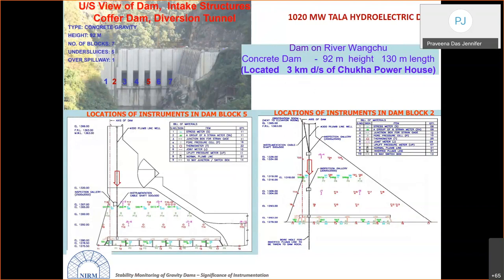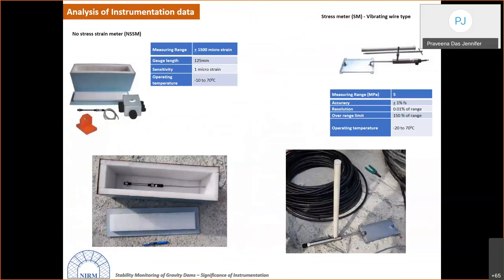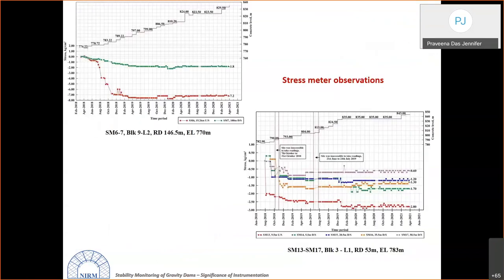Tala Dam is cited as another example of a well-developed instrumentation network, with instruments placed at every level — foundation gallery, temperature meter layer, and stress-strain meter layer — illustrating the typical layout followed for dam body instrumentation. No-stress strain meters record stresses other than those from concrete self-weight loading, while stress meters use an upper plate system embedded directly into the concrete.